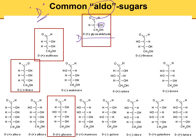For four-carbon sugars, you can have erythrose or threose. Threose has OH on opposite ends, erythrose has OH on the same side. I would say just memorize one of them. We memorize the three-carbon glyceraldehyde and the four-carbon erythrose. The D form is based on the most distant OH from the carbonyl carbon being on the right-hand side.